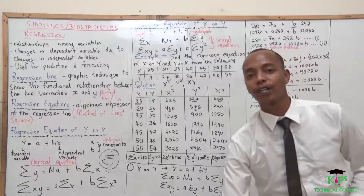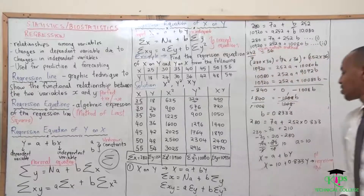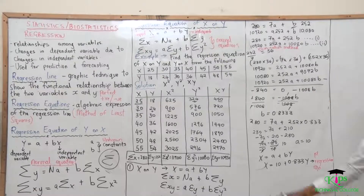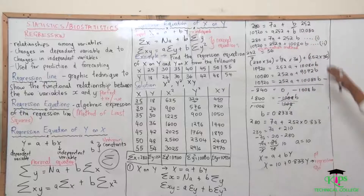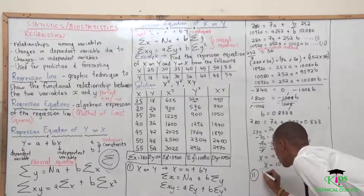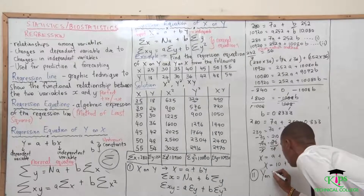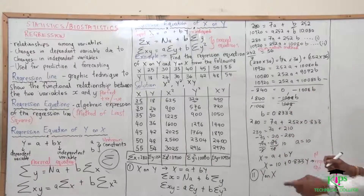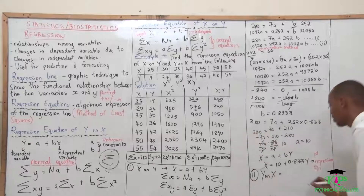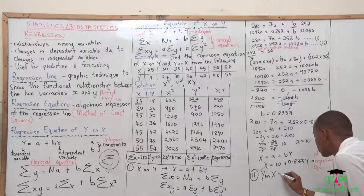The second part we are trying to find is the regression equation of y on x. We use the same method to come up with the regression of y on x, but let me just take us through very quickly. So in part 2, we are trying to find y on x. What is our calculation of y on x? We just remember the formula that we have.